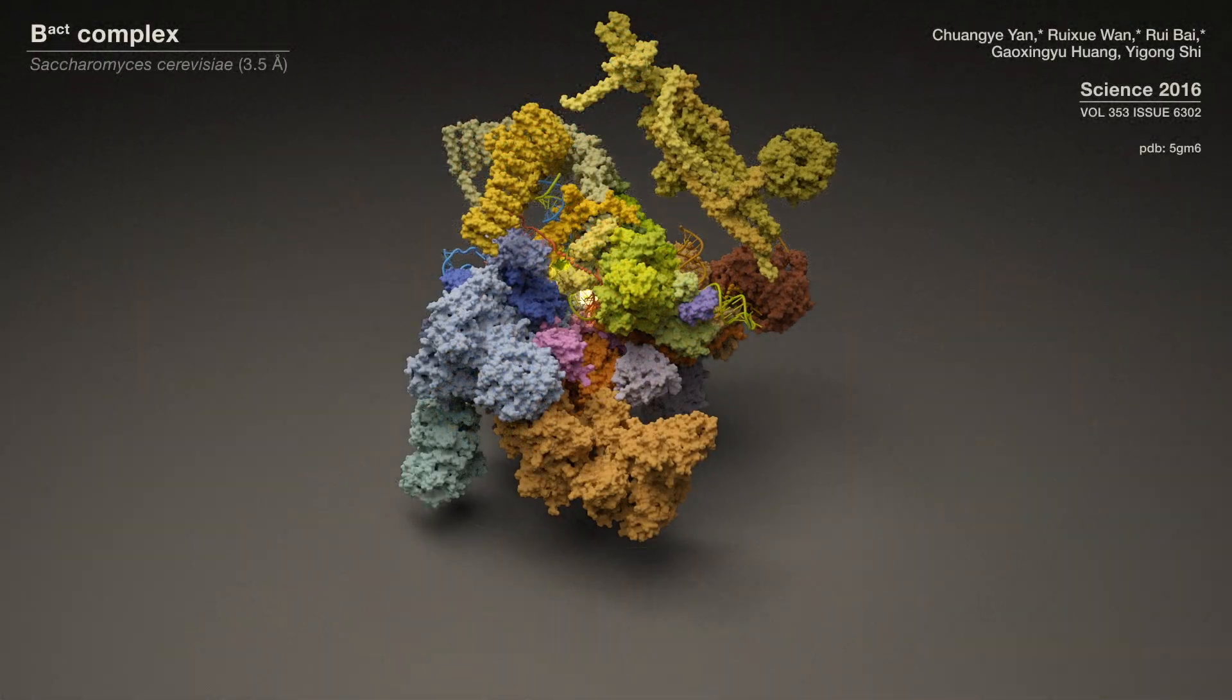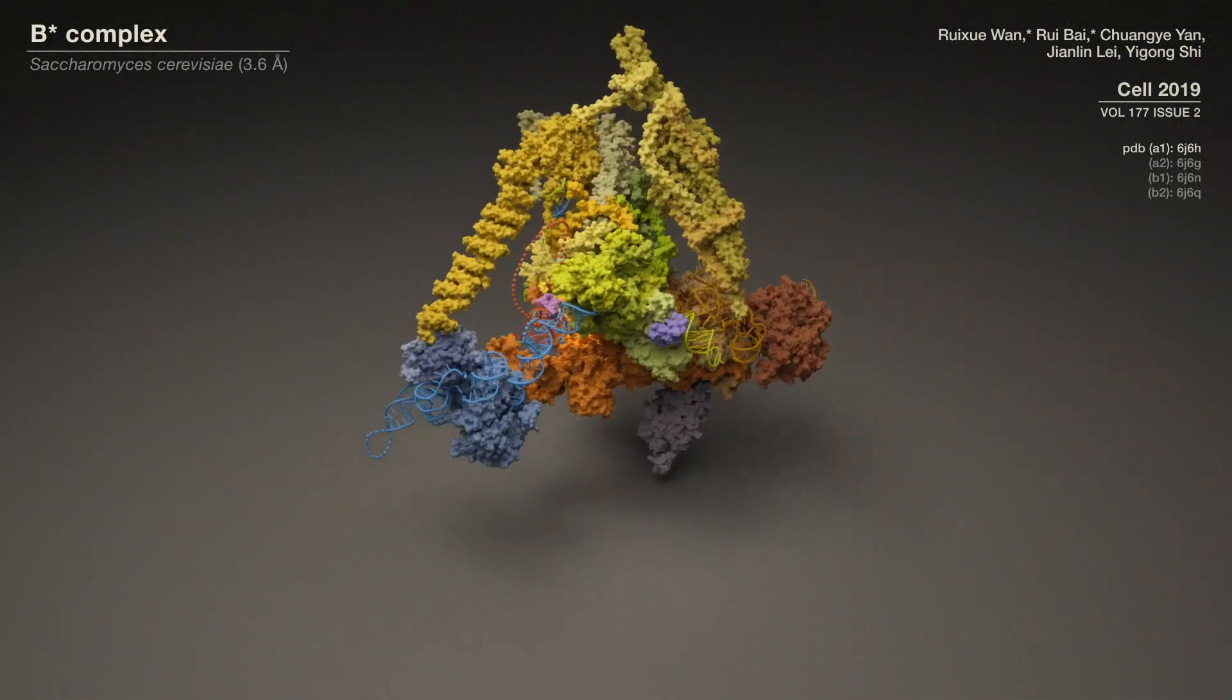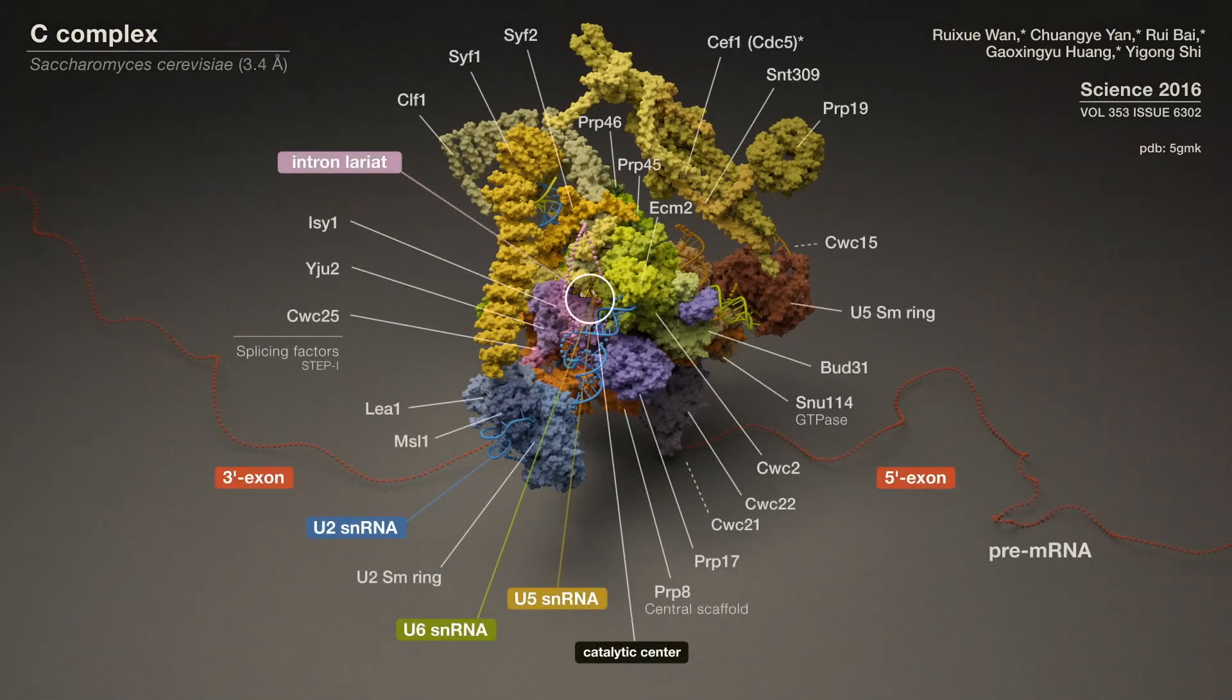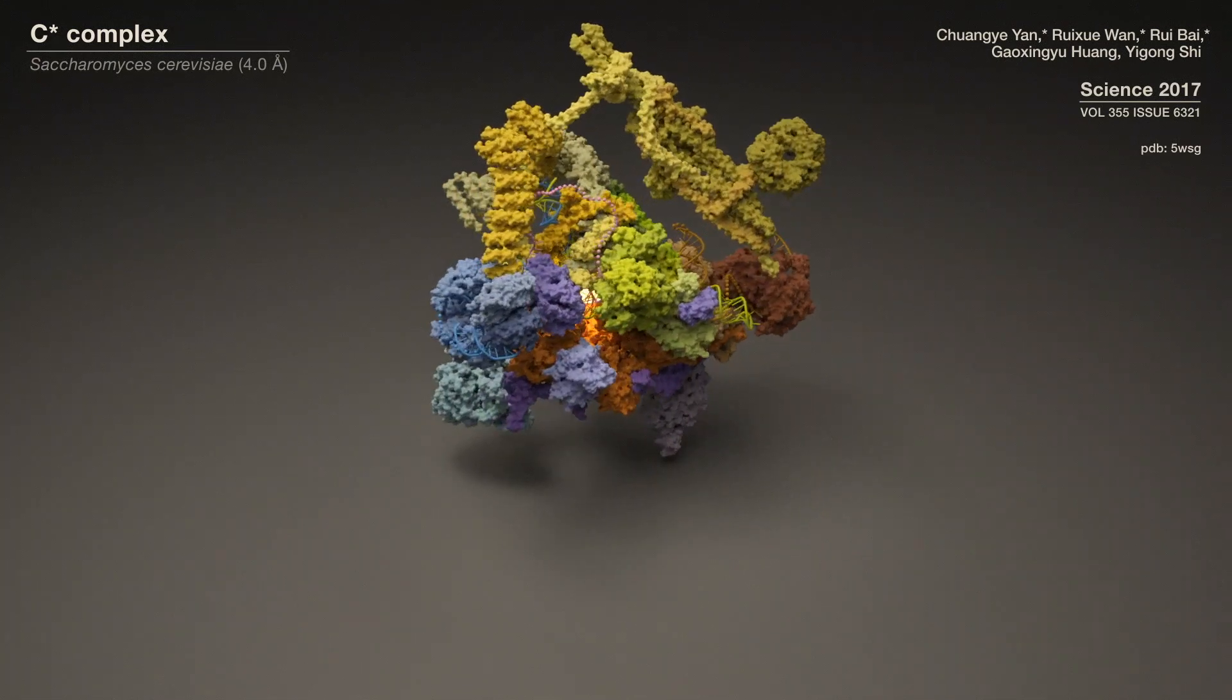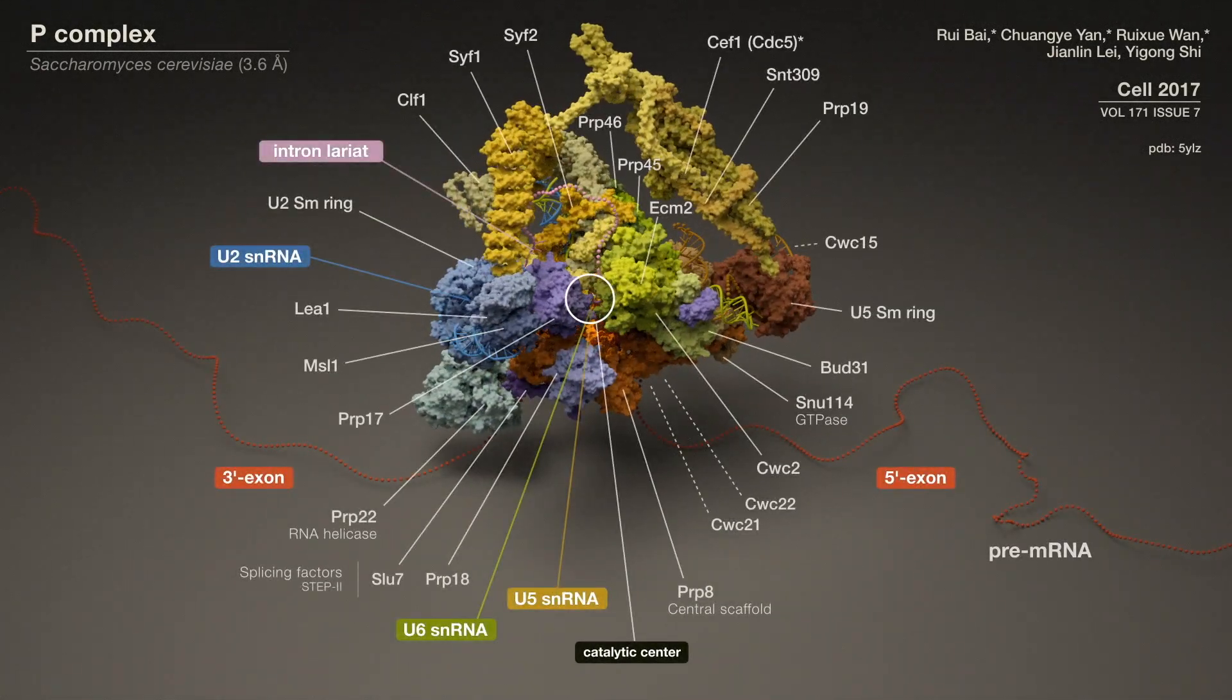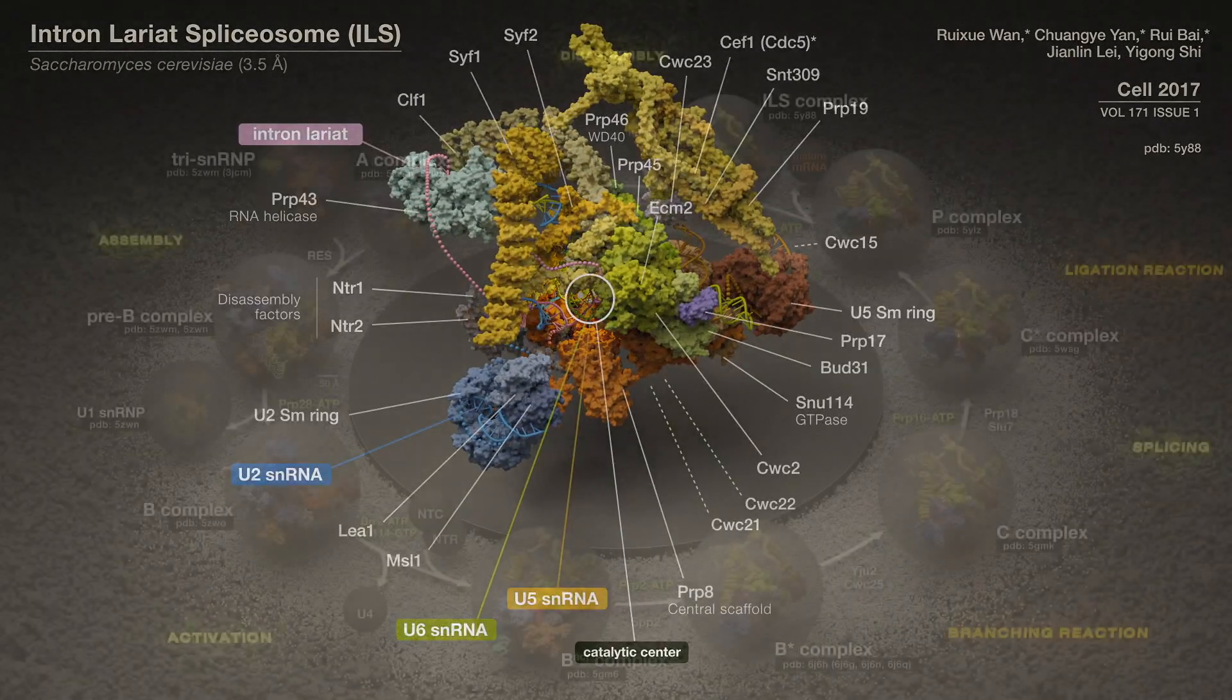The B-ACT complex, the activated spliceosome earliest to harbor the bona fide active site. The B-STAR, the catalytically activated complex, pivotal for understanding the branching reaction. The C-STAR, the catalytically activated spliceosome, which executes the exon ligation reaction. The P-post-splicing complex, important for understanding the transition from C-STAR to the ILS complex. And, the intron lariat spliceosome, providing insights into spliceosome disassembly and recycling mechanisms.